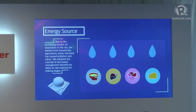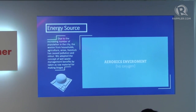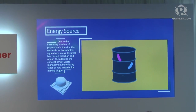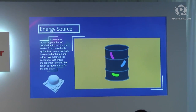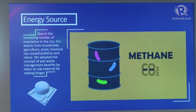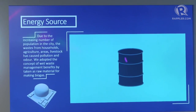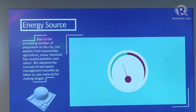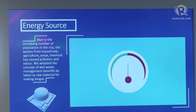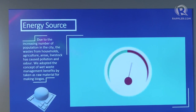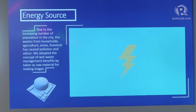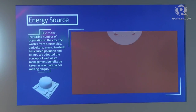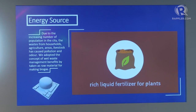Food scraps, manure, dairy, and meat products are combined with equal parts of water to produce an anaerobic environment in a digester. Bacteria consumes the waste and releases gases including methane and CO2, which are used as biogas. The biogas is scrubbed of CO2 and sulfur, then used in a gas-electric generator or natural gas boiler to generate electricity. The system also produces rich liquid fertilizer for plants.